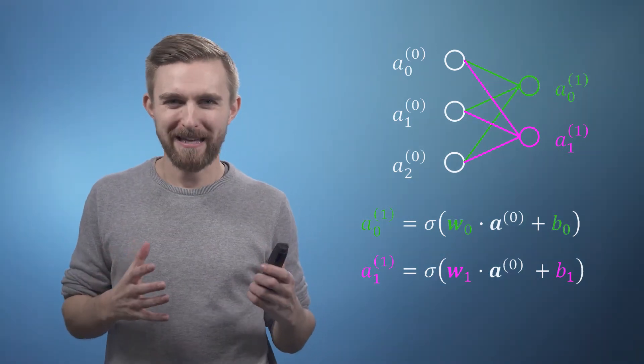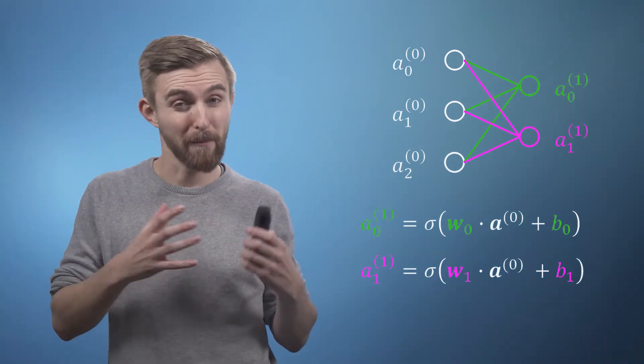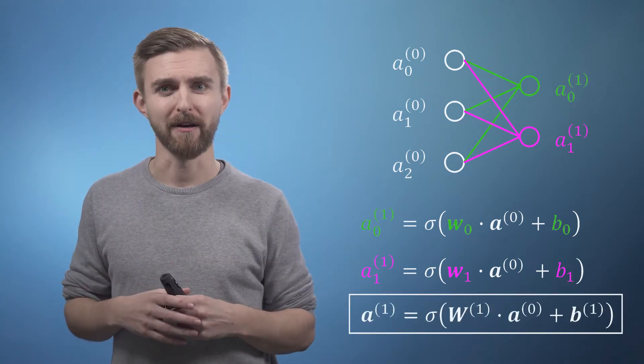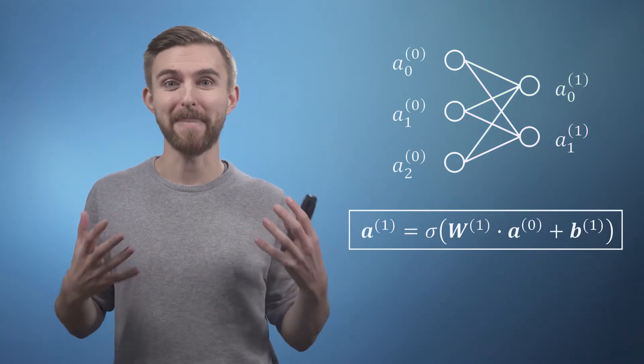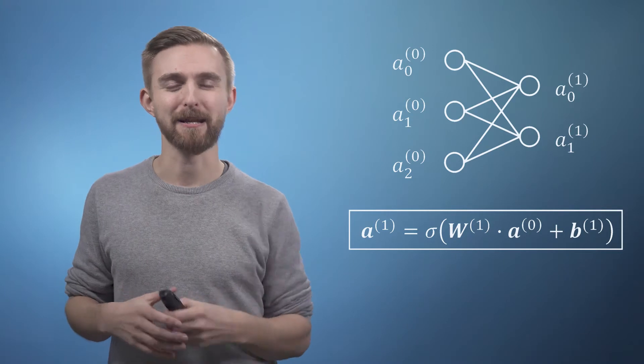Unsurprisingly, we can again crunch these two equations down to a more compact vector form, where the two outputs are each rows of a column vector, meaning that we now hold our two weight vectors in a weight matrix and our two biases in a bias vector.